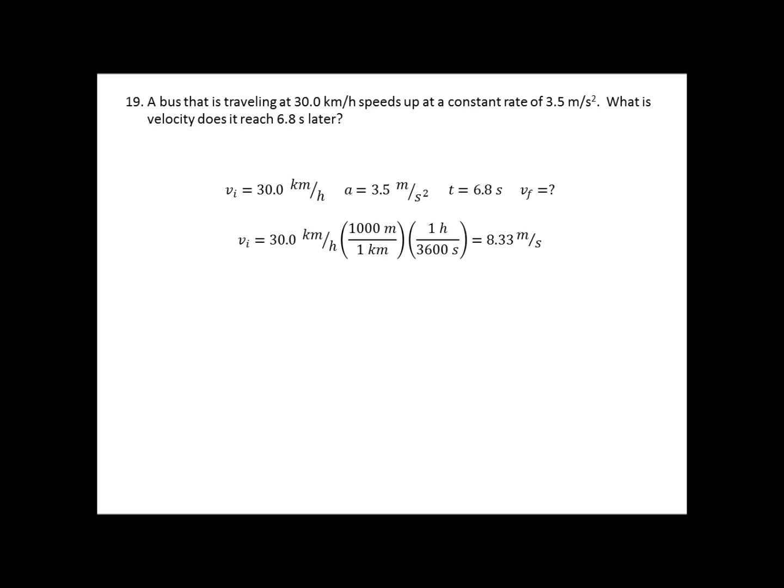Now, we've got a little bit of a problem with the initial velocity. The units are kind of out of whack with everything else. So, I'm going to change the kilometers into meters. And I'm also going to change the hours into seconds. So, in order to change it from kilometers to meters, I multiply by a thousand. In order to change the hours into seconds, I divide by 3600 seconds. What we find out is that the initial velocity is 8.33 meters per second.